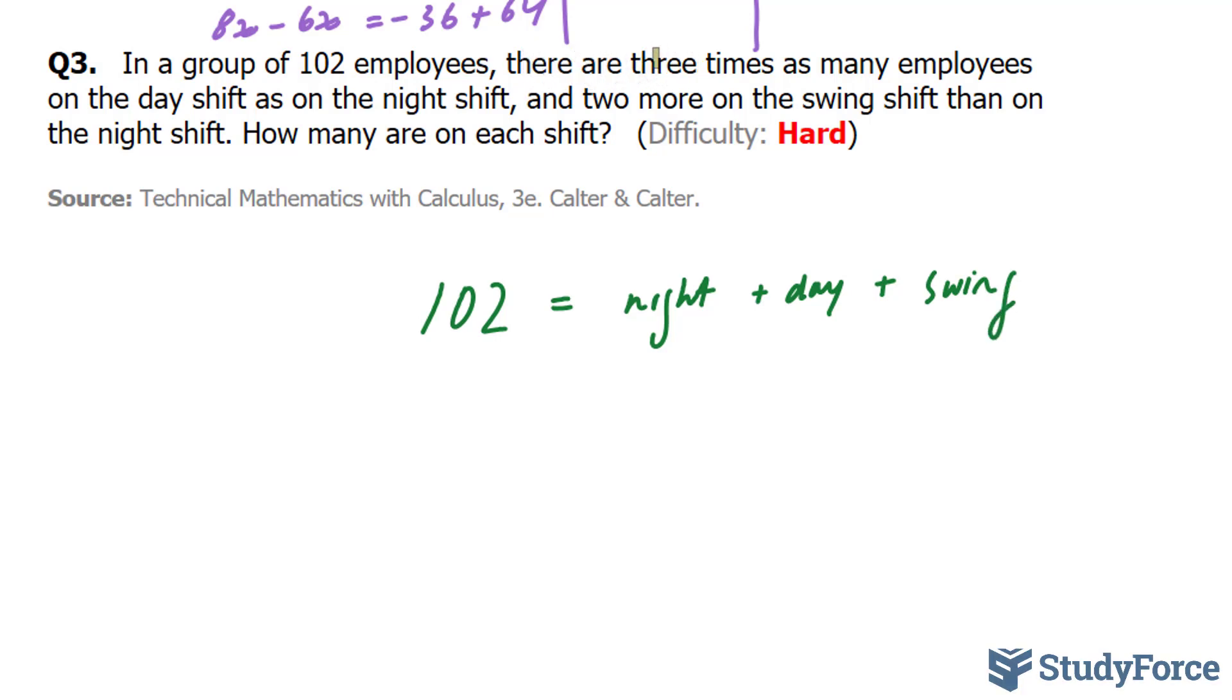And we are told that there are three times as many employees on the day shift as on the night shift. So for the day shift, there exists three times as many employees, which we'll represent as x, during the day. So we can replace this part with 3x. In addition, we are told that two more on the swing shift than on the night shift. So there are more on the swing shift, two more, than there is during the night. So we'll call this swing, and that is equal to two more than at night. We'll replace this part with 2 plus x, and the night will simply be replaced with x. So this should be the amount of night shift employees.